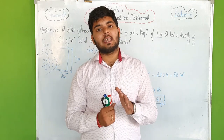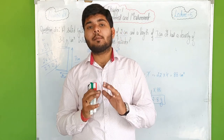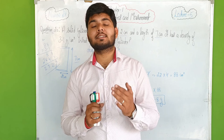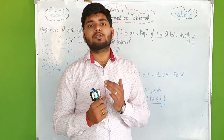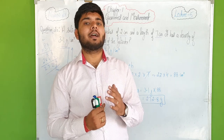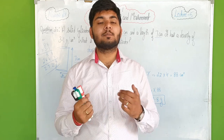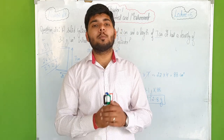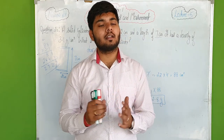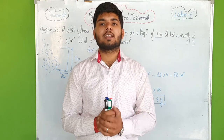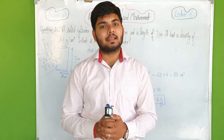Dear students, I hope all the numericals are clearly understood. One numerical remains — numerical 21, which is similar to numerical 15 (Rohan's box). You should solve that one by yourself. That's it for today's lecture. I hope all topics, concepts, and numericals are clear. Thanks for joining, and see you in the next lecture.